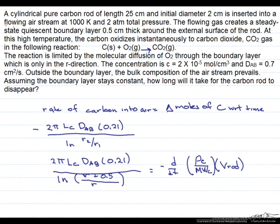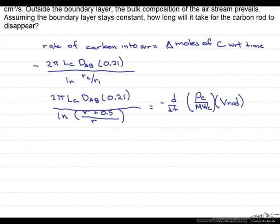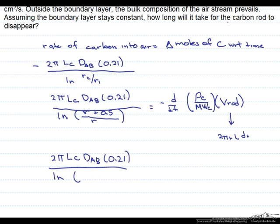So the volume of the rod is just the surface area times the radius. So this is going to equal 2πLc·D_AB times 0.21 over the ln of r plus 0.5 divided by r.